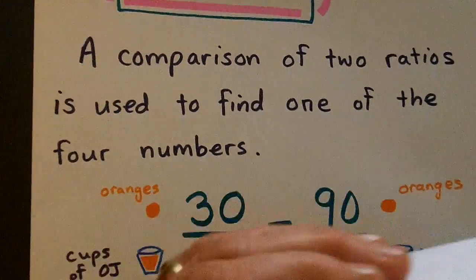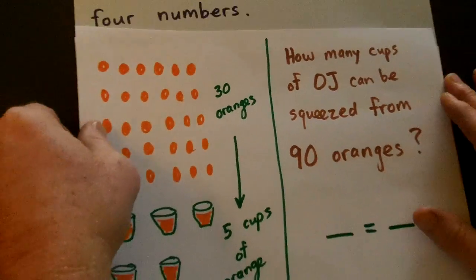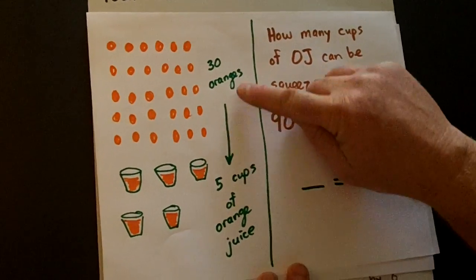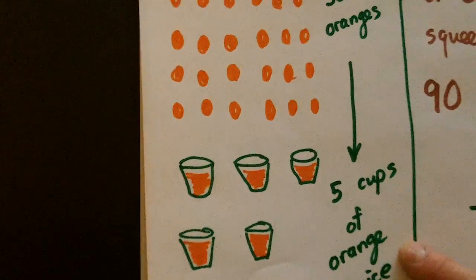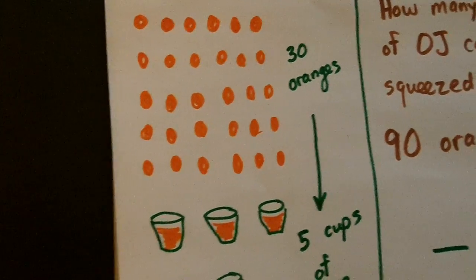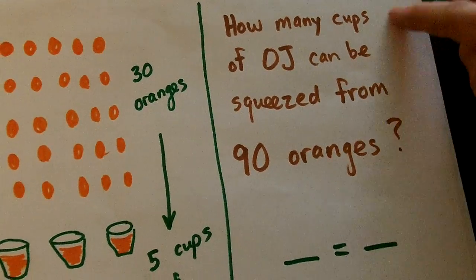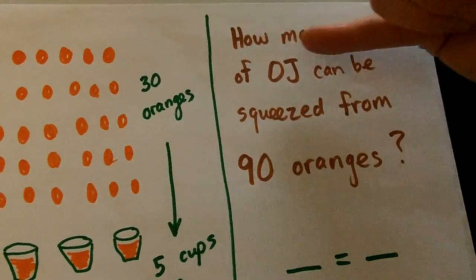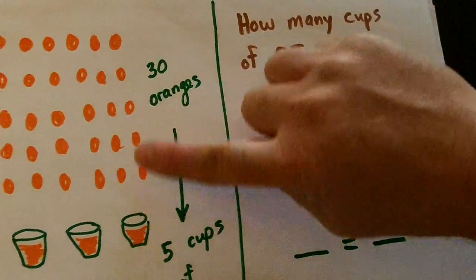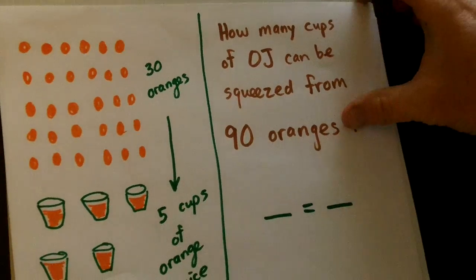All right, so let's take a problem here. Let's say I went out into my yard, I picked 30 oranges, I juiced them, and then that created five cups of orange juice from those 30 oranges. Then, if we go over here, here's our proportion question. How many cups of OJ can be squeezed from 90 oranges that are about the same size as these? That is a proportion question.